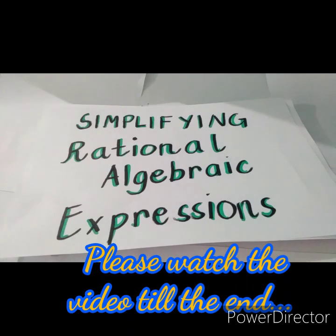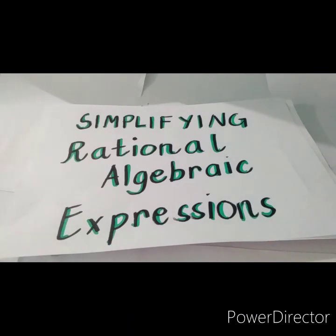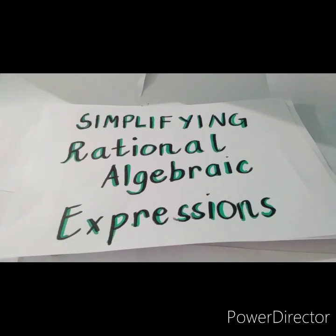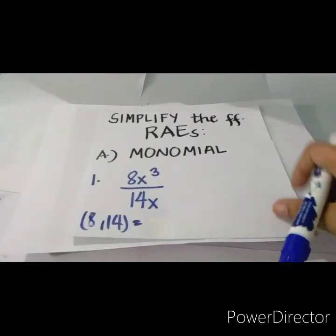Good day, Grade 8 students. This time I will teach on how to simplify rational algebraic expressions. Simplifying rational algebraic expressions simply means expressing the expression into its lowest term or simplest form, and that is when the numerator and denominator have no common factors other than one.